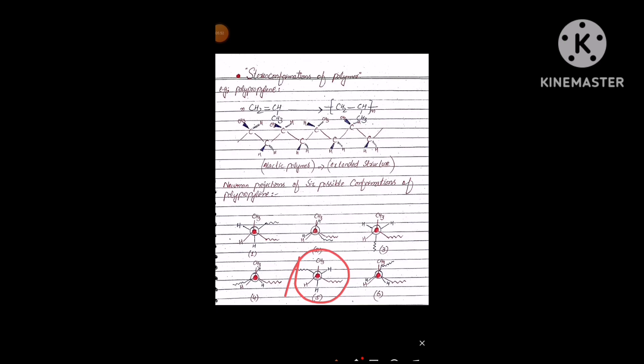It is your assignment to find the full stability order of the six conformers. The most stable is structure number five — determine the remaining order and share it in the comment section. I will check and reply to you.